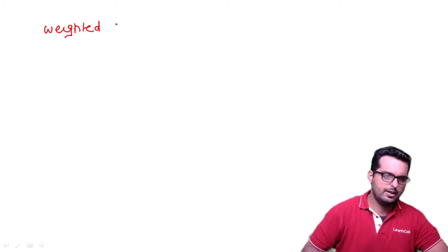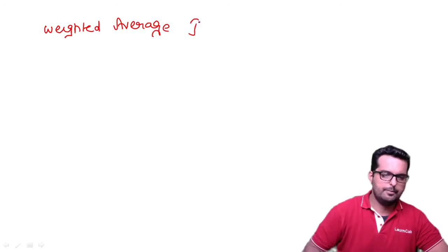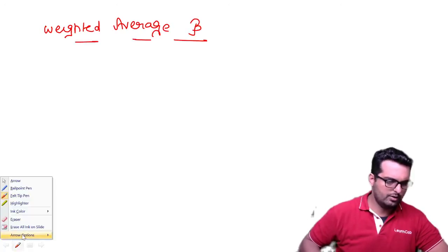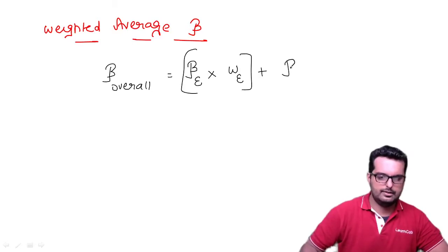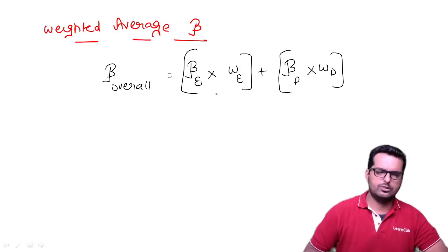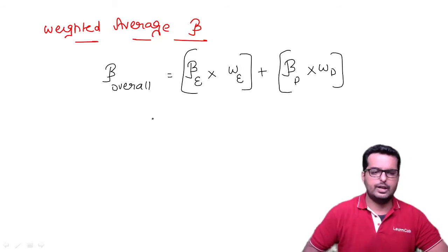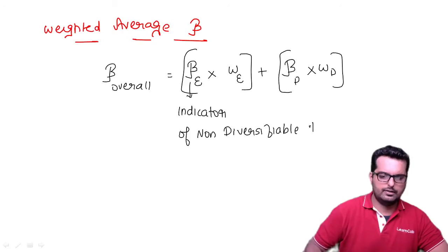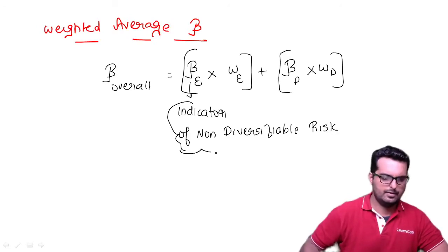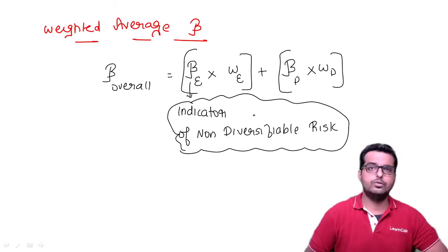After short selling, we will learn about weighted average beta. We have already learned that beta overall is nothing but beta of equity multiplied by weight of equity, plus beta of debt multiplied by weight of debt. Beta is an indicator of non-diversifiable risk.